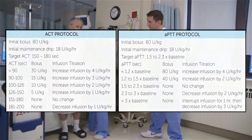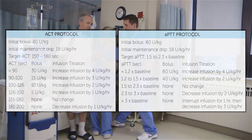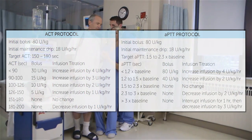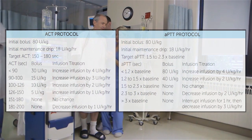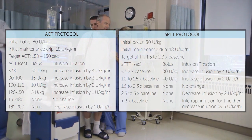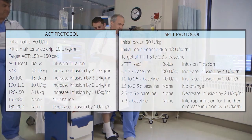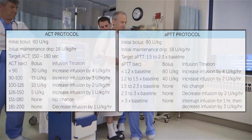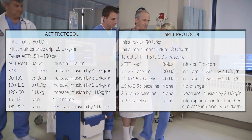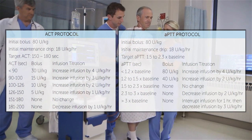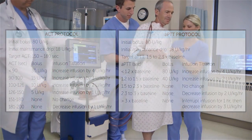Systemic anticoagulation is required for Hemolung therapy. Prior to connecting to the Hemolung RAS, a target activated clotting time of 150 to 180 seconds, or activated partial thromboplastin time of 1.5 to 2 times baseline, is recommended.